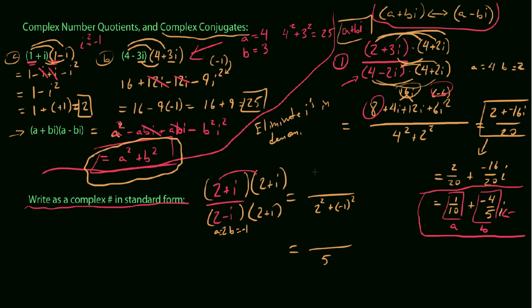Now on top, we FOIL this out, we get 4 plus 2i plus 2i, so plus 4i, and then we got plus i squared. What do we know about i squared? Well, it's the same thing as negative 1.